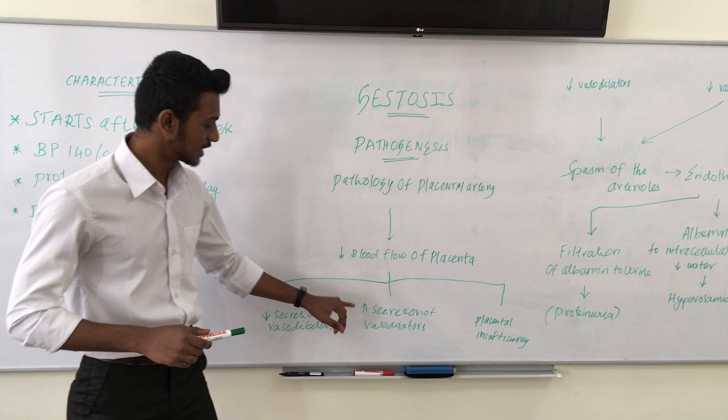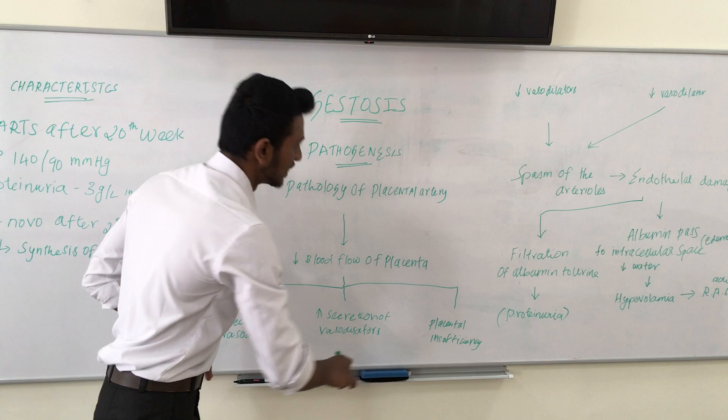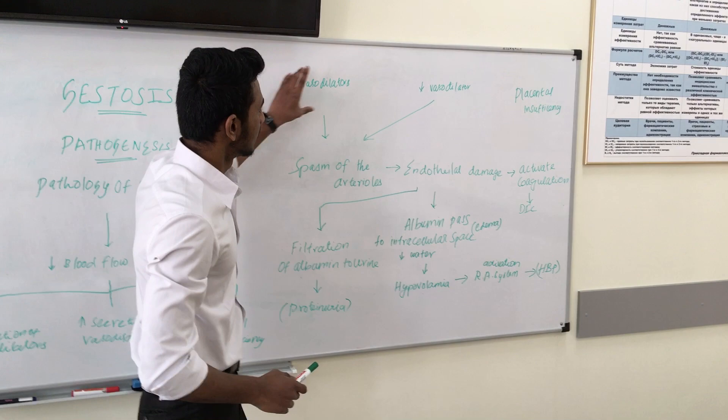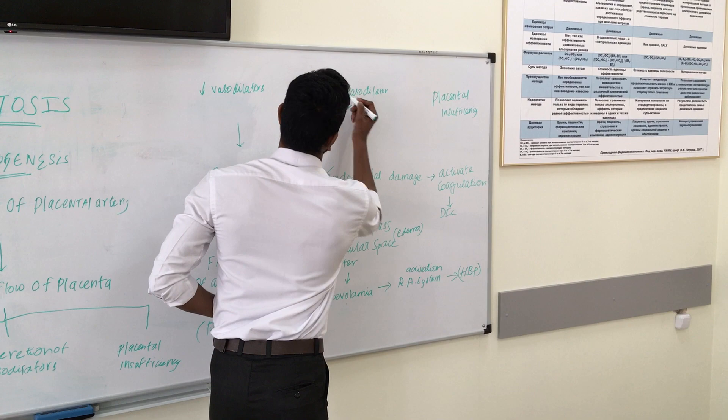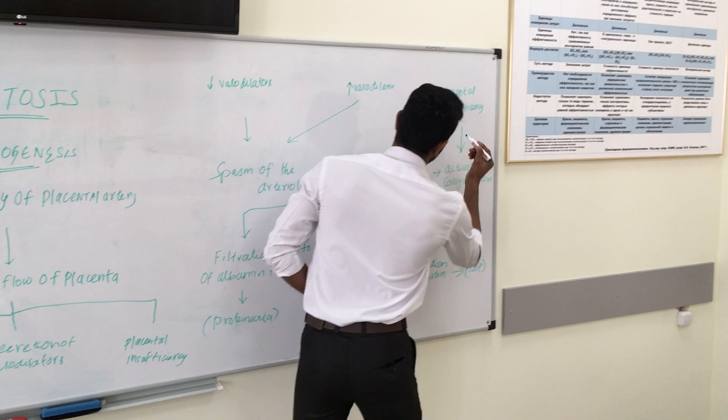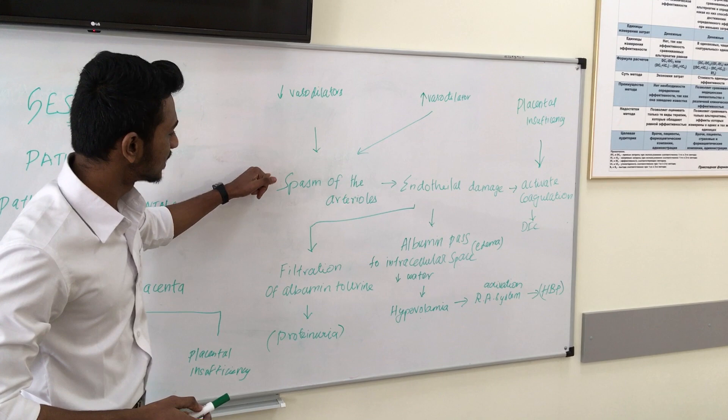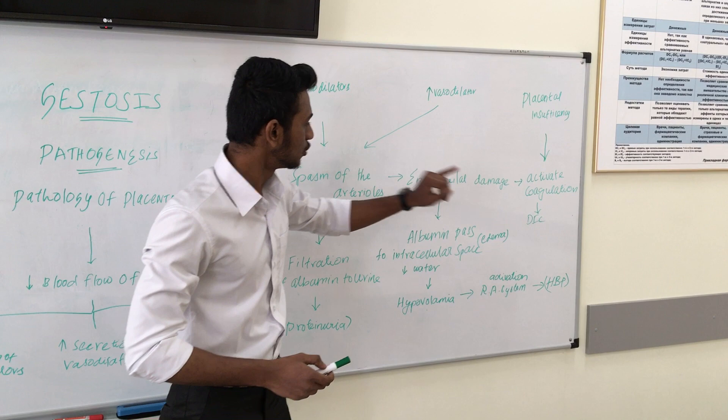The decrease in vasodilators and increase in vasoconstrictors, along with placental insufficiency, leads to spasm of the arterioles. This spasm of the arterioles then causes endothelial damage.